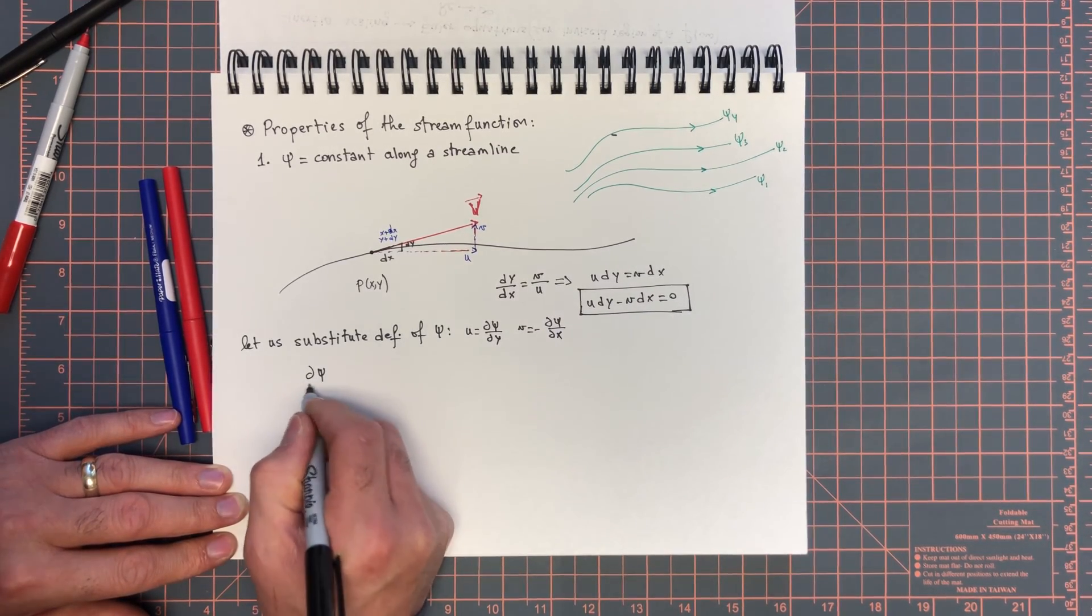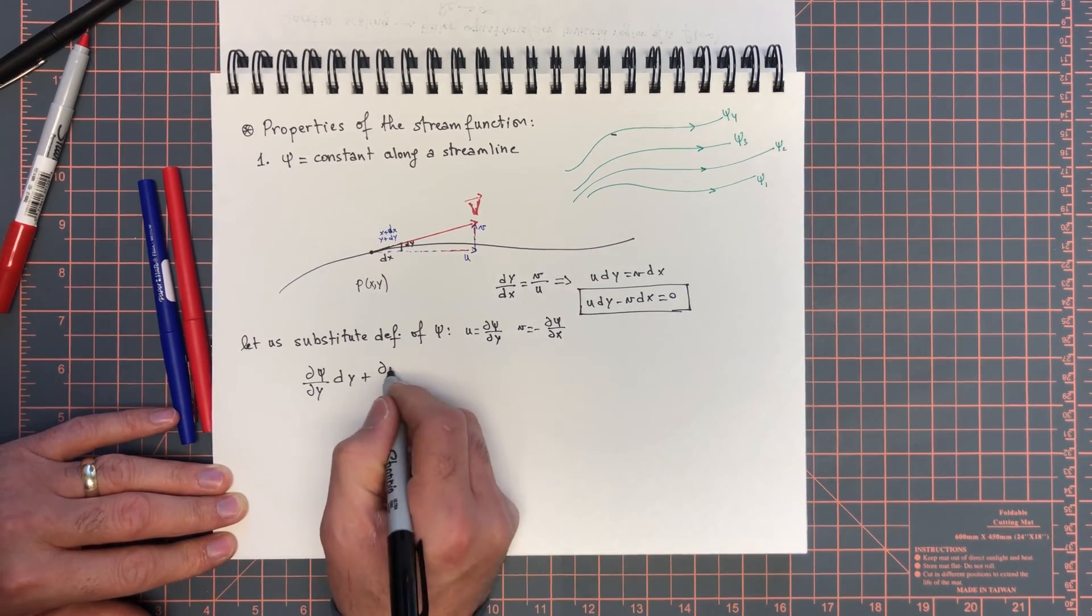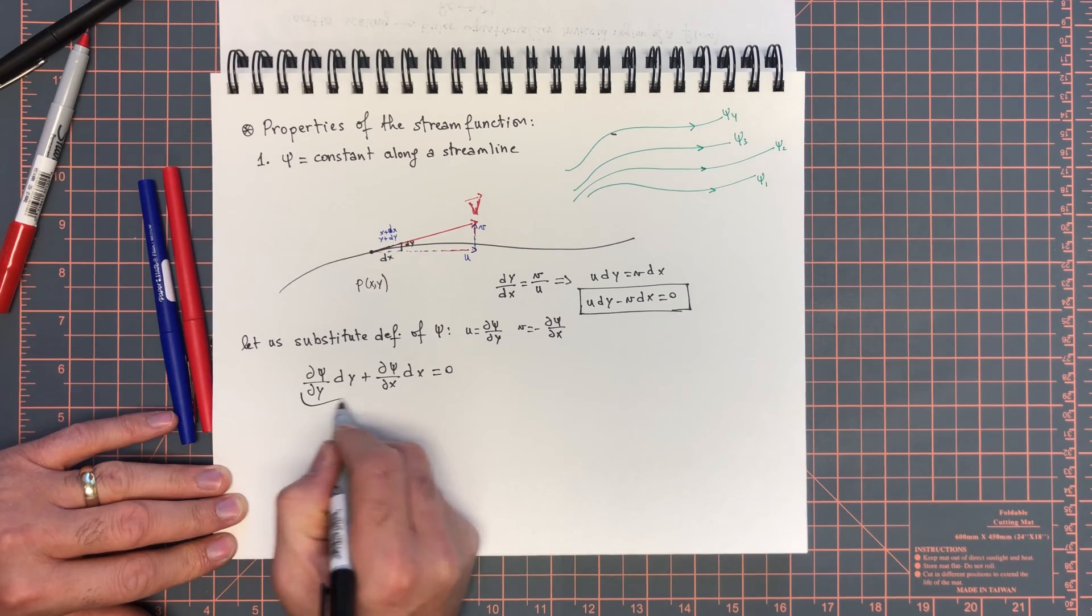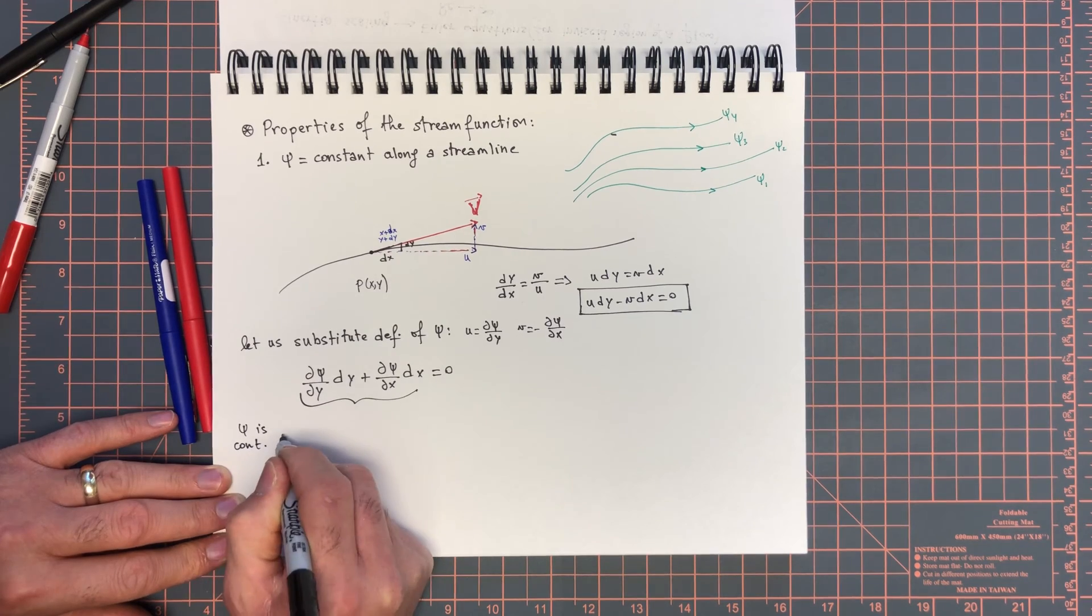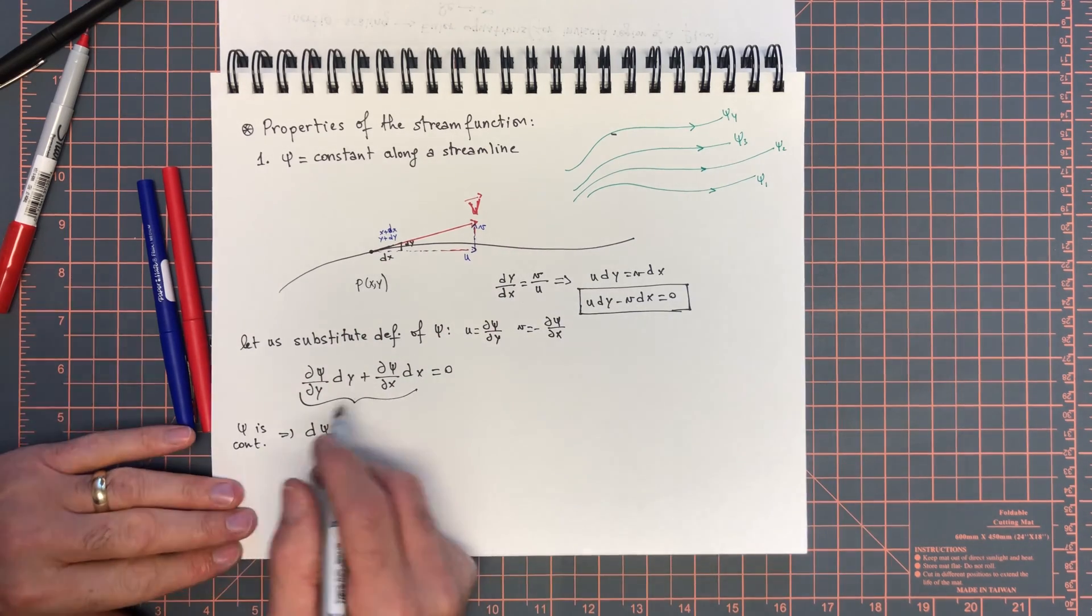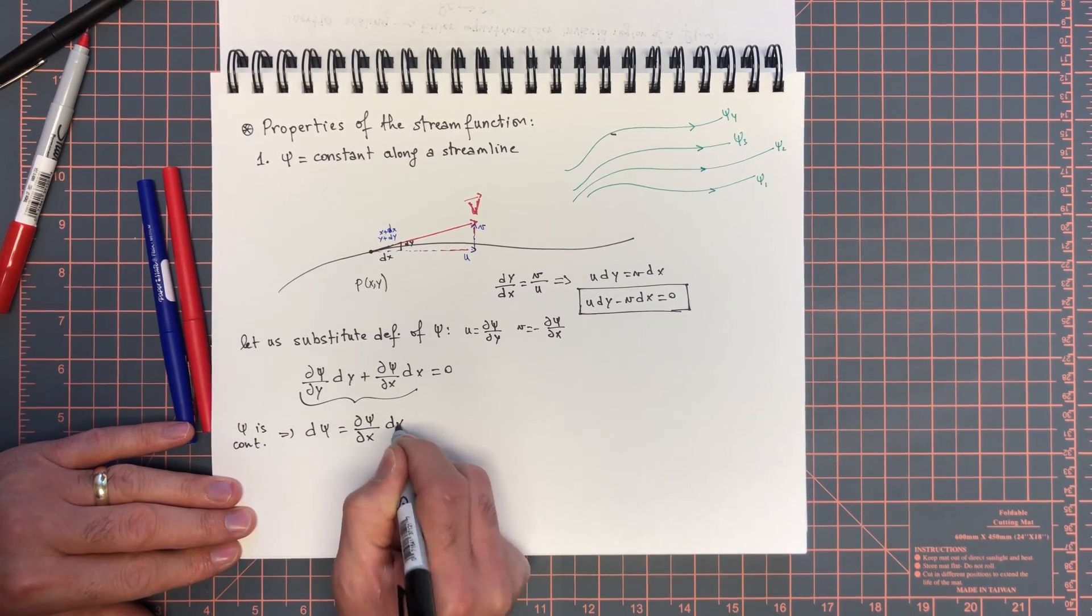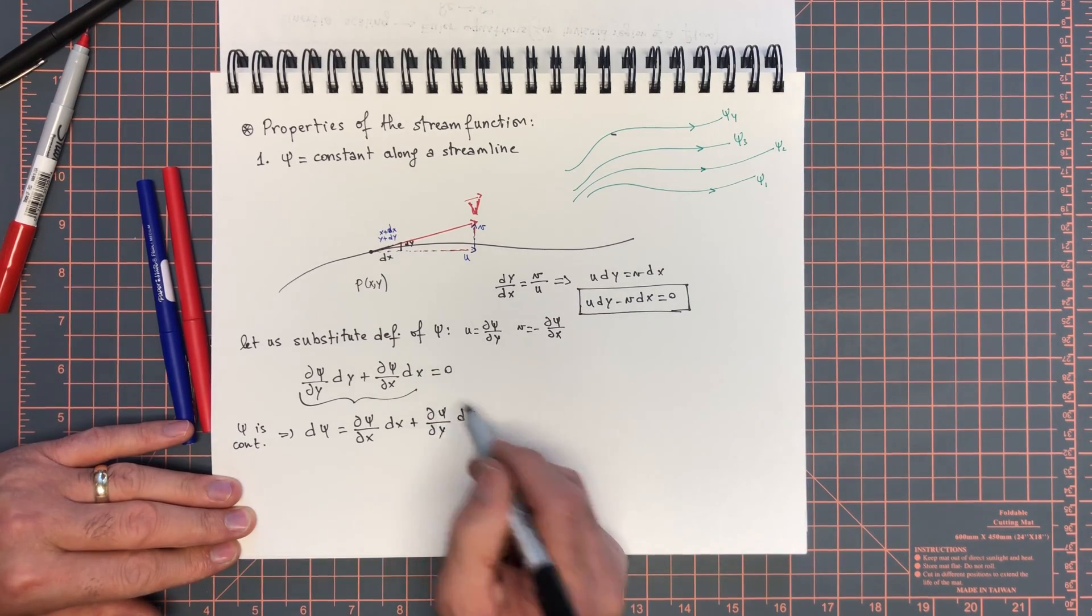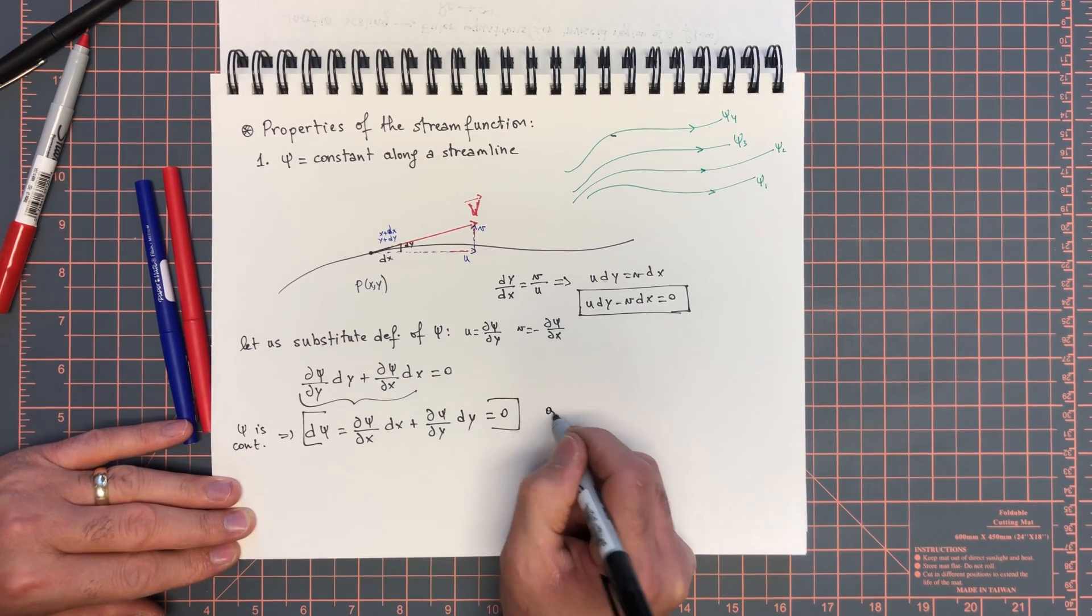We get dψ/dy dy, minus times minus plus, so dψ/dx dx equals zero. Now what is this quantity? If ψ is continuous, then dψ - the total derivative, total change of ψ along a streamline (remember we're still on a streamline) - is equal to dψ/dx dx plus dψ/dy dy, and according to that equation that's equal to zero.